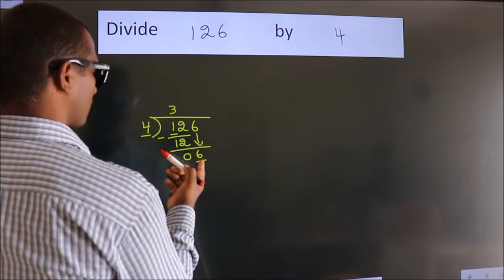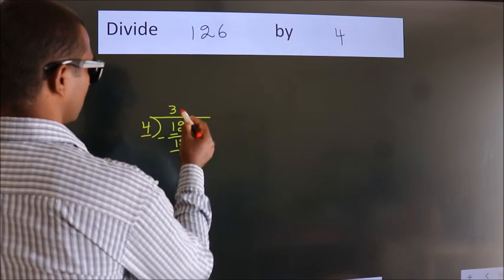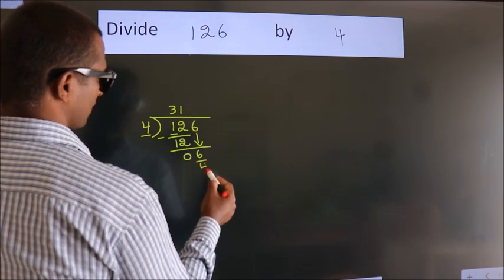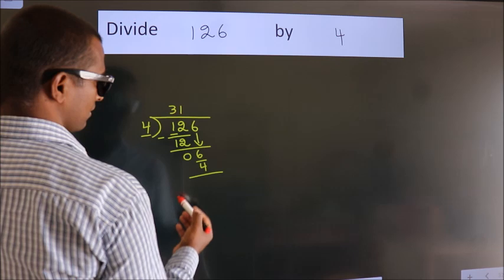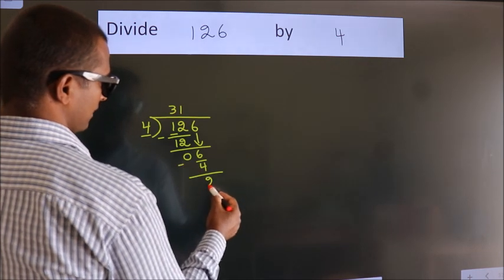A number close to 6 in the 4 table is 4 ones is 4. Now we should subtract. We get 2.